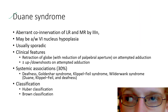Next is Duane syndrome. It occurs due to aberrant co-innervation of the lateral rectus and medial rectus by the third cranial nerve, and may be associated with sixth nerve nucleus hypoplasia. It is usually sporadic. The clinical features include retraction of the globe with reduction of palpebral aperture on attempted adduction, and up- or downshoot on attempted adduction. Systemic associations include deafness, Goldenhar syndrome, Klippel-Feil syndrome, and Wildervanck syndrome. Wildervanck syndrome includes Duane syndrome, Klippel-Feil syndrome, and deafness. There are two classifications: Huber classification and Brown classification.